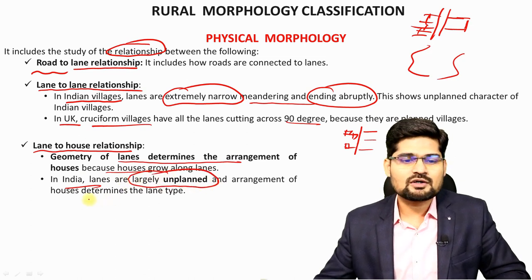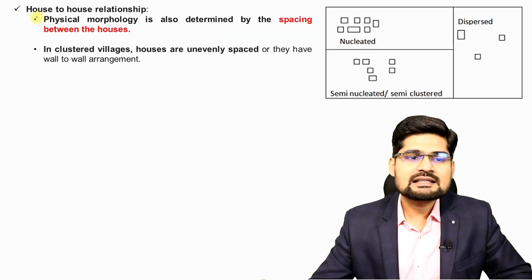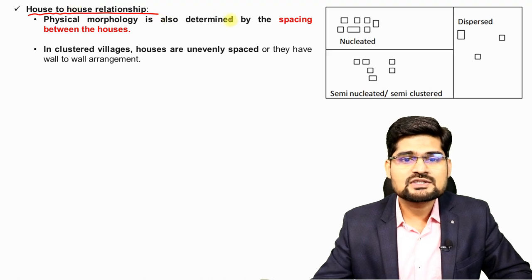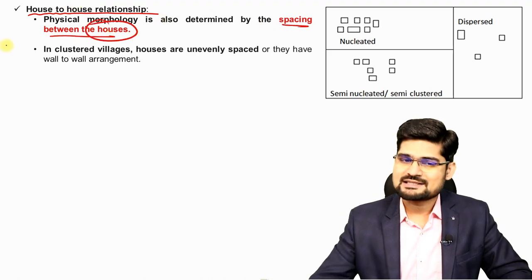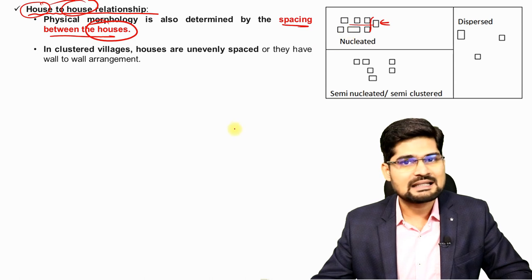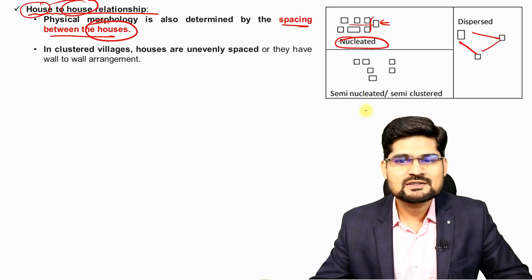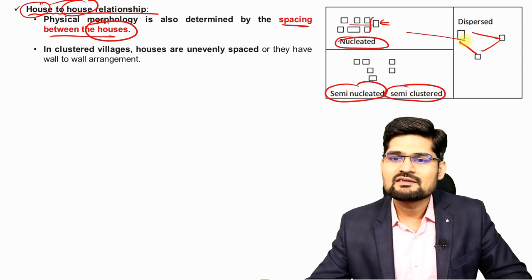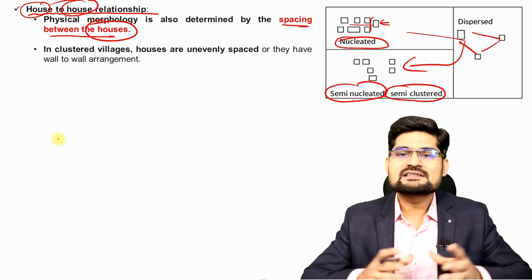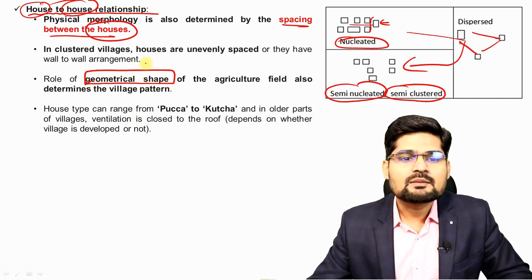The third relationship is lane-to-house — how houses are planned alongside a lane. The geometry of lanes determines the arrangement of houses, because houses need space to grow along the lanes. In India, we observe mostly unplanned arrangement of houses in clustered settlements. The fourth relationship is house-to-house — the spacing between houses. One can be nucleated or clustered, another can be dispersed with much space between two houses, or semi-nucleated in between.